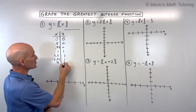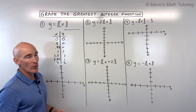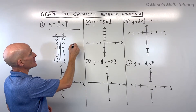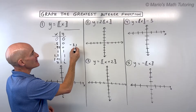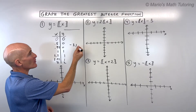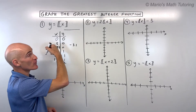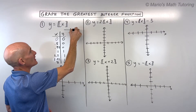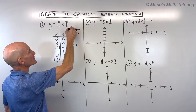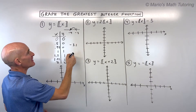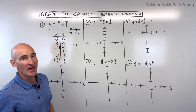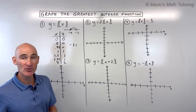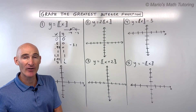So 2 would be 2. One mistake students sometimes make: if you had negative 3.1, this would actually round to negative 4. Because on the number line, here's negative 4 and here's negative 3 — negative 3.1 is right here, and you round to the left, which is negative 4.